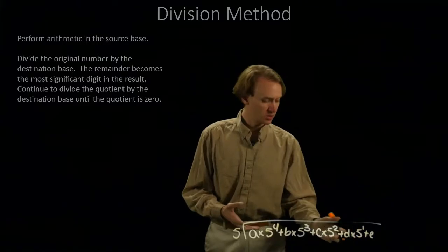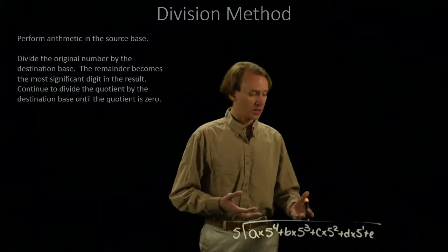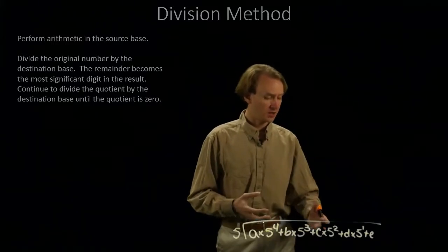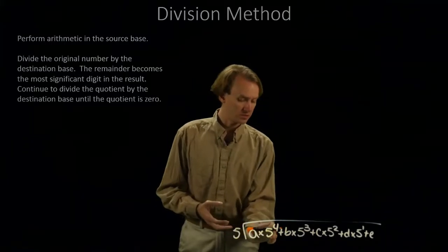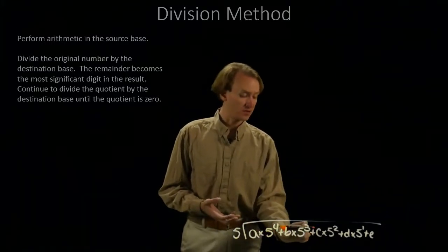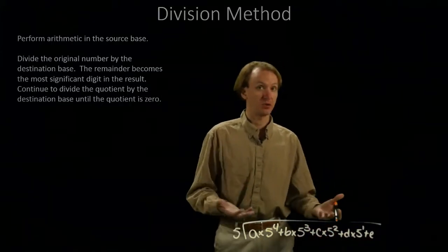each of these coefficients is something less than 5. I want to find out what they are, and dividing by 5 is going to pull a 5 out of each of these terms. All of these are bigger than 5 because they've got an exponent of 5 as part of them. The e, though, doesn't have any exponents of 5.